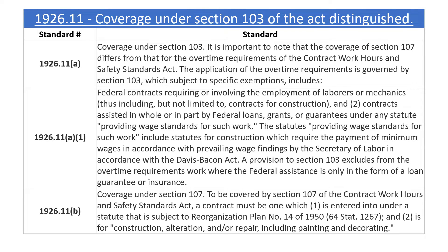The statutes providing wage standards for such work include statutes for construction which require the payment of minimum wages in accordance with prevailing wage findings by the Secretary of Labor in accordance with the Davis-Bacon Act. A provision to Section 103 excludes from the overtime requirements work where the federal assistance is only in the form of a loan guarantee or insurance. 1926.11b: To be covered by Section 107, a contract must be one which is entered into under a statute subject to Reorganization Plan No. 14 of 1950 (64 Stat. 1267) and is for construction, alteration, and/or repair including painting and decorating.